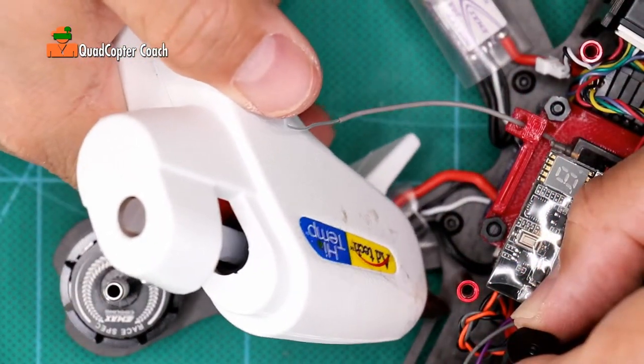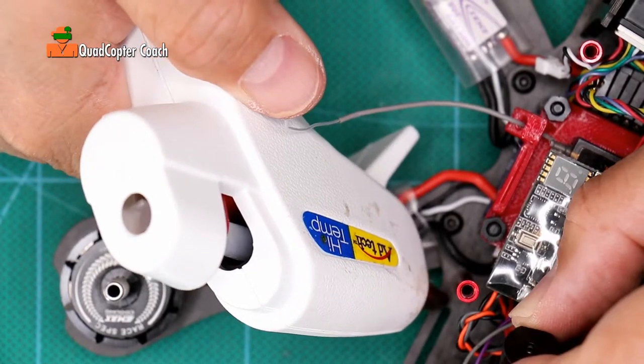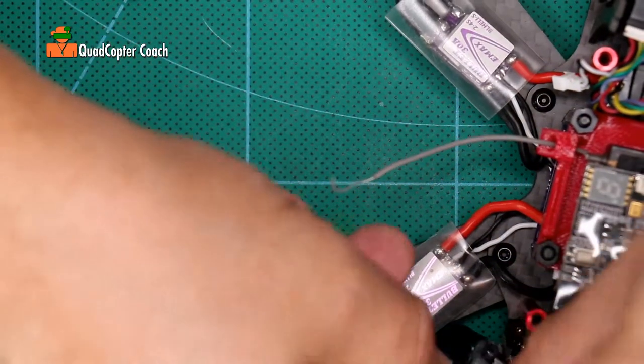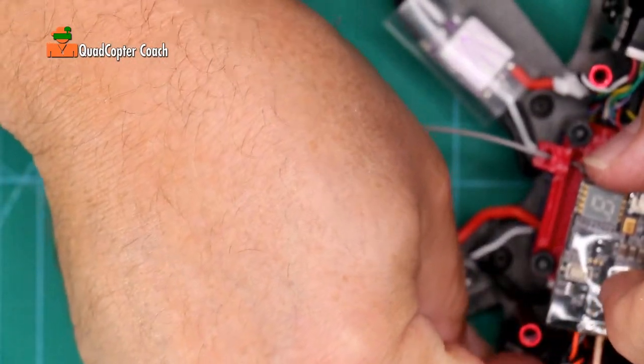I want to put it right there against that post, so I'm going to put a little bead of hot glue right there. Before it sets, I'm going to take this beeper and just set it right in there like that.